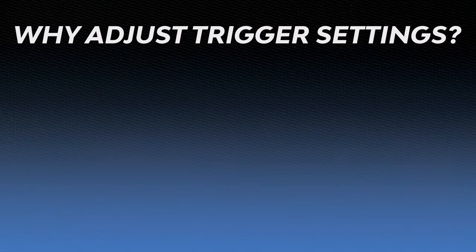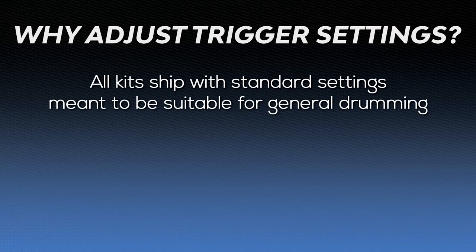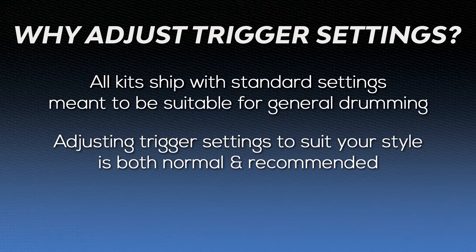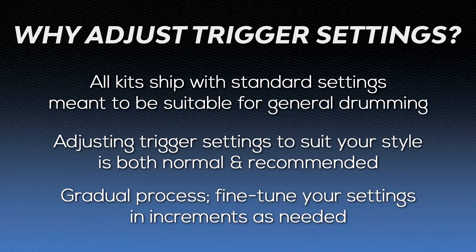First, let's go over why it's important to know how to adjust your kit's trigger settings. Every Alesis drum kit ships with a standard set of settings, which is meant to be as general as possible to be playable by all kinds of drummers. It's both normal and recommended to adjust your kit's settings to suit your playing style. This is a gradual process, and most drummers slowly tune their kit over time and make adjustments as needed.